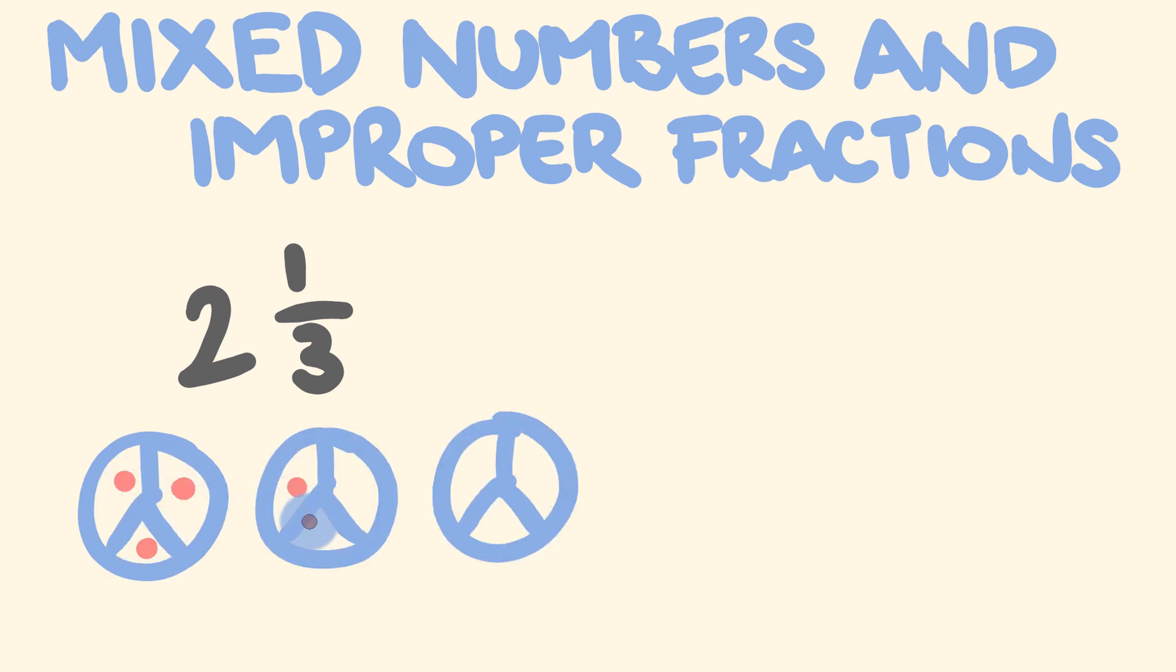We have 1, 2, 3, 4, 5, 6. These are the whole bits here. We have 7. So this is going to be 7 thirds. But what we could also think about with this is we could go, okay, 2 times 3. This is 2 times 3 here, which is equal to 6.